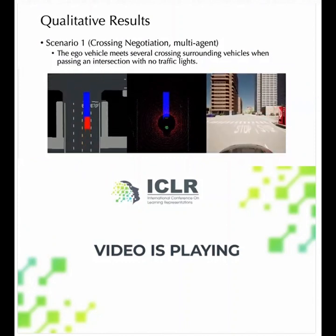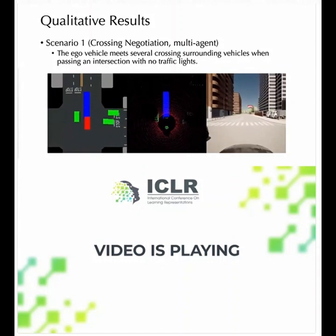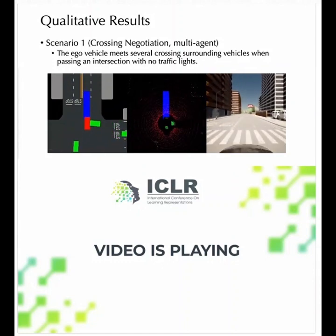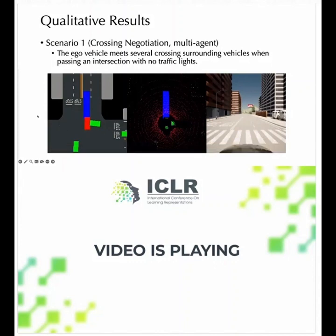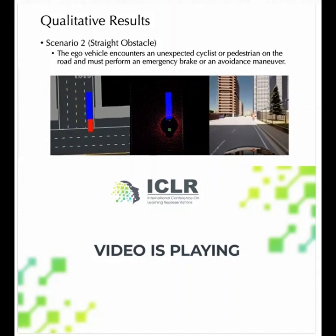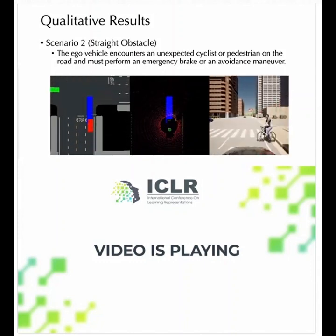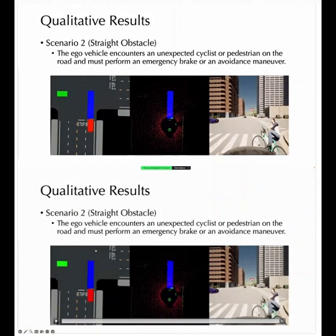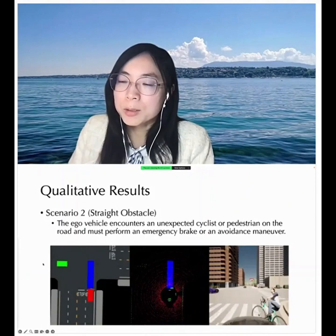Looking at some qualitative results: one scenario involves crossing negotiation in a multi-agent setting where multiple vehicles come by, some of which are adversarial and can coordinate with each other, leading to a collision for the ego vehicle. The second scenario is the straight obstacle case where a cyclist drives by — a single-agent behavior that generates safety-critical scenarios.